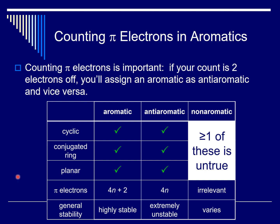Let's say you have just begun learning about identifying aromatic, anti-aromatic, and non-aromatic compounds. To do so, you first need to determine if a compound is cyclic, planar, and conjugated around the ring. If all of those are true, then the compound will be aromatic or anti-aromatic. If one of these three is untrue, then the compound is non-aromatic.